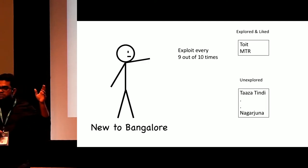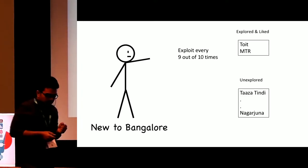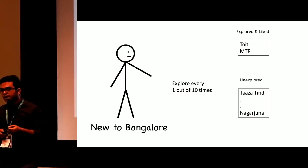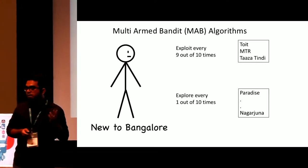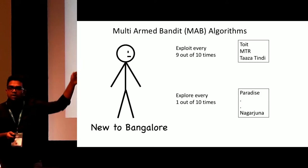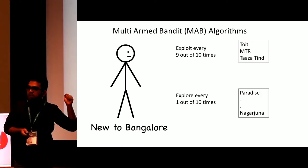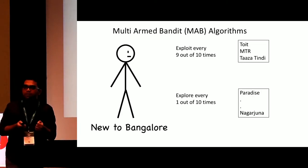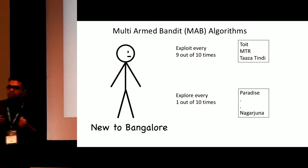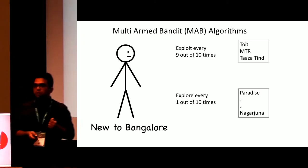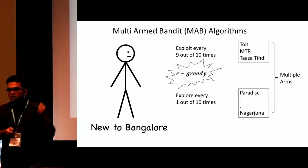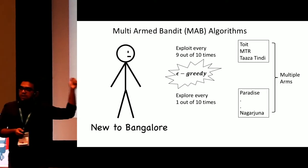The next time he wants to go to a restaurant, he plays it safe and goes to those he liked — nine out of ten times. But he gets bored and occasionally wants to explore new restaurants. If he goes to the unexplored bucket and likes them, he adds them to the liked bucket. This is a multi-arm bandit setting. The restaurants are your multiple arms and the reward he is optimizing is a good dining experience. He exploits nine out of ten times and explores one out of ten. This is the simplest form: epsilon-greedy, where epsilon is 0.1, meaning 10% exploration and 90% exploitation.